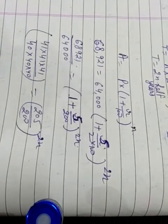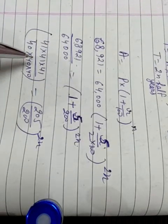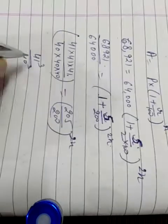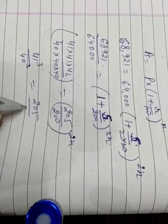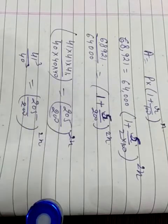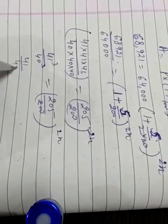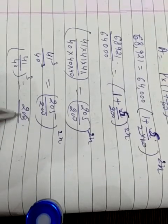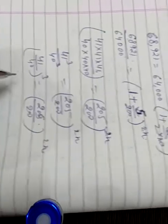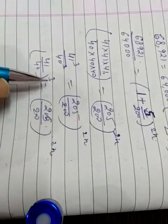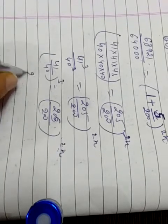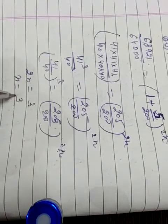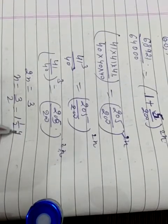Convert into powers: 41 raised to the power 3, 40 raised to the power 3. So 41 upon 40 whole power 3 is equal to 205 upon 200 whole power 2N. Now we take powers only, because we need to find the value of the power. So 2N is equal to 3.